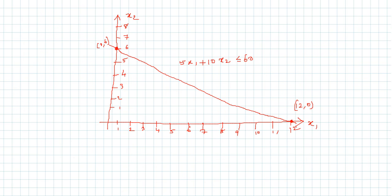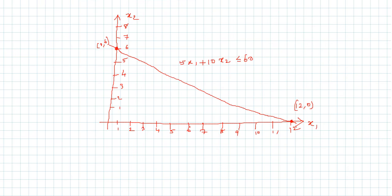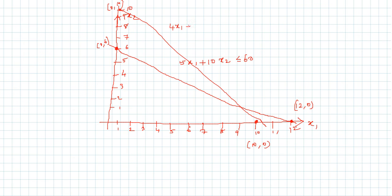Now we plot the second line. The points are (0, 10) and (10, 0). We plot (0, 10) on the x2-axis and (10, 0) on the x1-axis. Connecting these gives the line representing 4x1 + 4x2 ≤ 40.